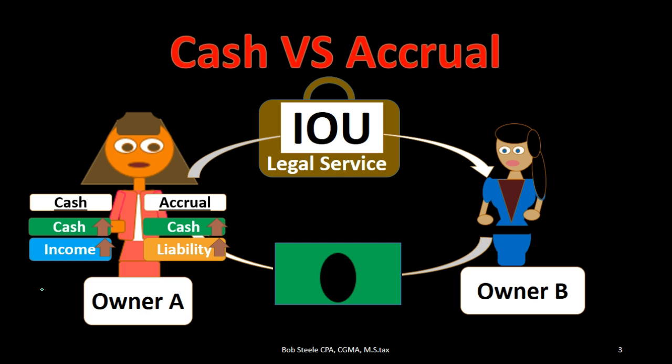Not every business is going to get paid before they do the work. Many businesses are the reverse — we invoice and then we get paid. But many types of businesses operate in this format. For example, if we provided a concert, we're going to sell the tickets before we have the concert. That would be a type of business where we would typically have unearned revenue received — the payment received before the service is done.